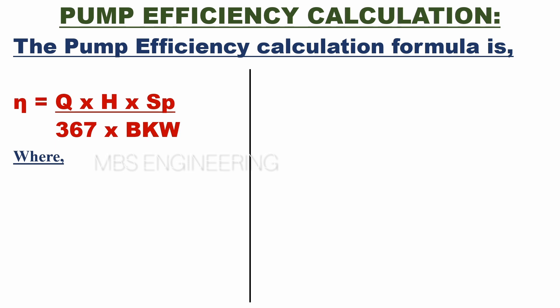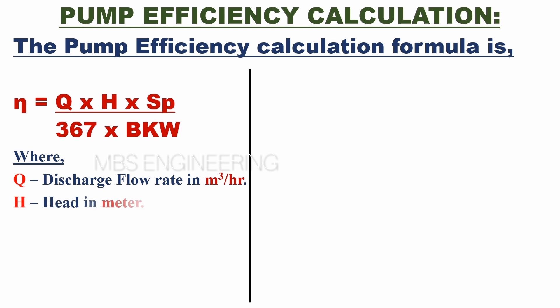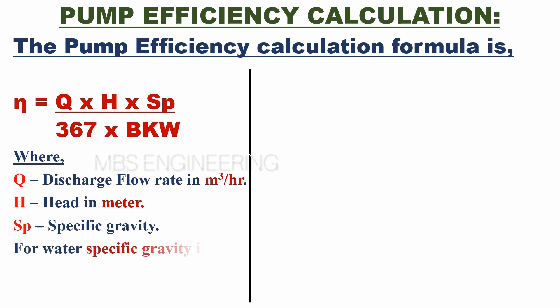Q is the discharge flow rate in cubic meters per hour. H is the head in meters. SP is the specific gravity — for water, specific gravity is 1.